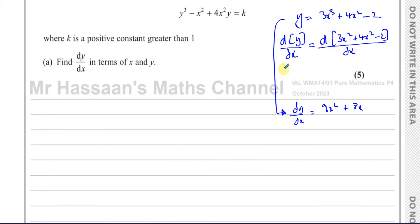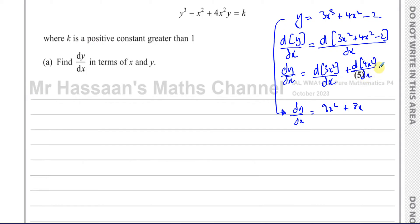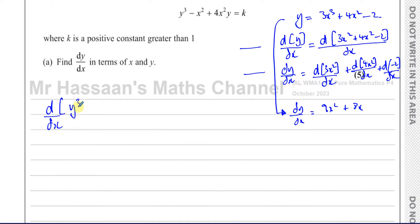When you differentiate y with respect to x you get dy/dx. We're differentiating each term separately — the differential of 3x³ with respect to x, plus the differential of 4x² with respect to x, plus the differential of -2 with respect to x. We don't write all of this down, but that's what we're doing. The same applies when differentiating the implicit curve equation.